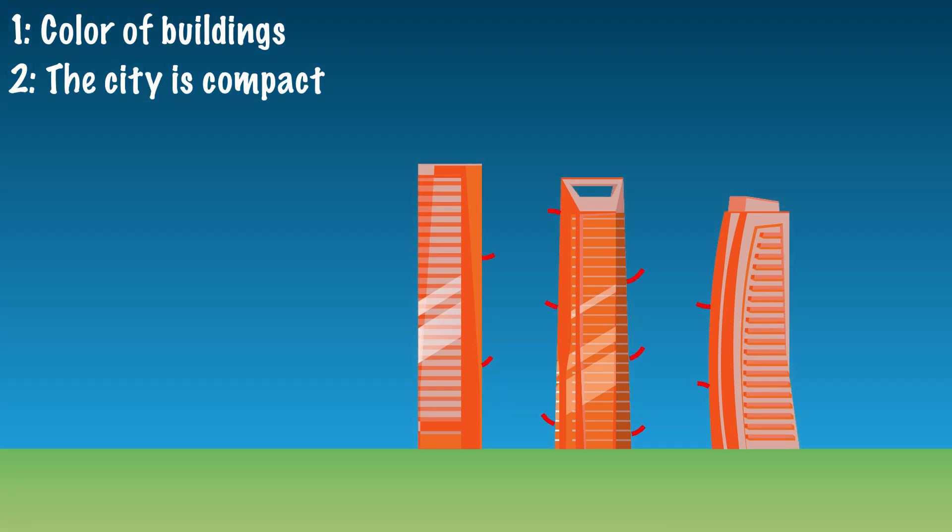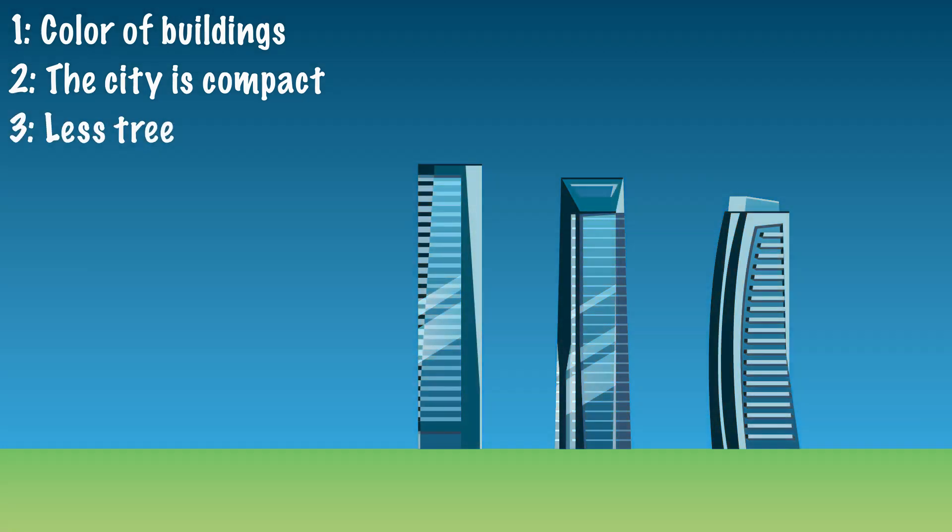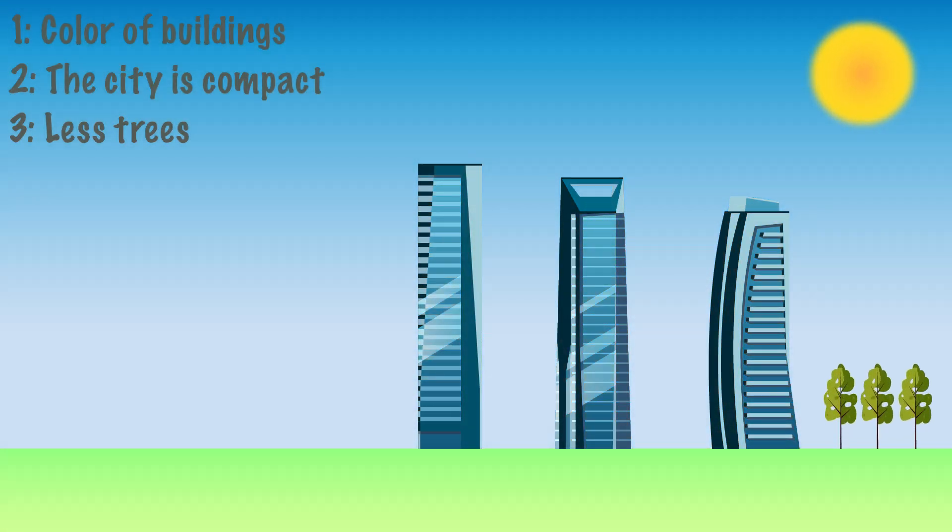Buildings radiate heat at night. In the city, buildings are close together so they radiate heat to other buildings and the heat is trapped. Third, there are fewer trees in cities. Trees use solar energy to evaporate water. Because the solar energy is used to evaporate water, it has a cooling effect. Because there are fewer trees in the city, the temperature is higher.